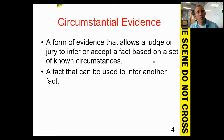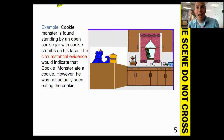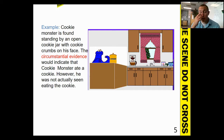For example, let's say Cookie Monster is found standing by an open cookie jar with crumbs all over his face. The fact that he has crumbs on his face and was seen by the cookie jar means he most likely ate the cookie. But no one actually saw him do it — there's no direct evidence. We can infer he most likely ate the cookies, but it requires an inference or guess. That, by definition, is circumstantial evidence.